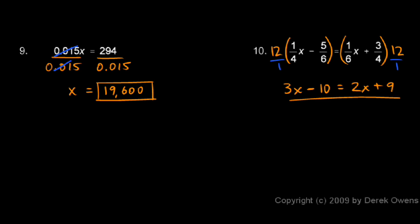So I have 3x minus 10 equals 2x plus 9. The problem is not yet solved, but all the fractions are gone. And what I have now is a problem that's noticeably simpler.